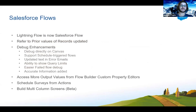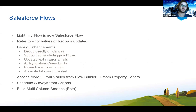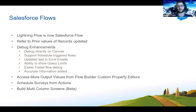The next slide looks at Salesforce Flow updates. The first thing is a naming change — it was previously called Lightning Flow and is now being renamed to Salesforce Flow. You can now refer to prior values of records that have been updated. What you can do, prior to the record triggered event, is refer to those prior values of the record in your flow — which is quite handy.